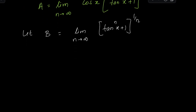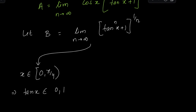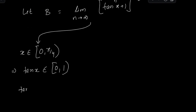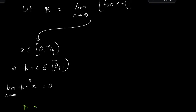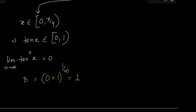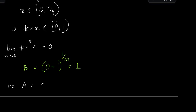Now this expression B depends on where x is lying, so I'll break it into two cases. Case 1: if x lies in the interval (0, π/4), then tan(x) is between zero and one — it's a fraction. Raising a fraction to a very large power n gives zero, so B becomes (0 + 1)^(1/n) = 1. Therefore, A = cos(x) · 1 = cos(x) in this interval.